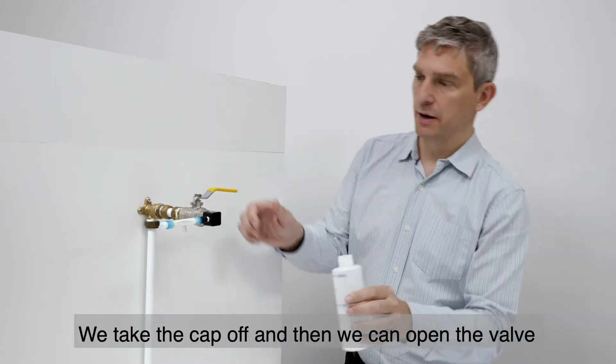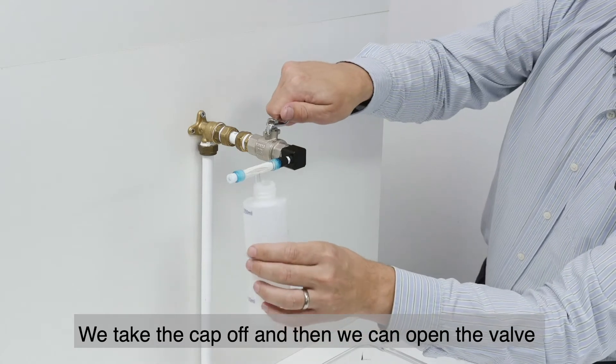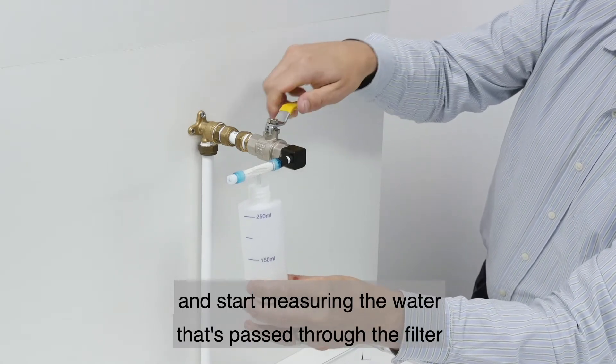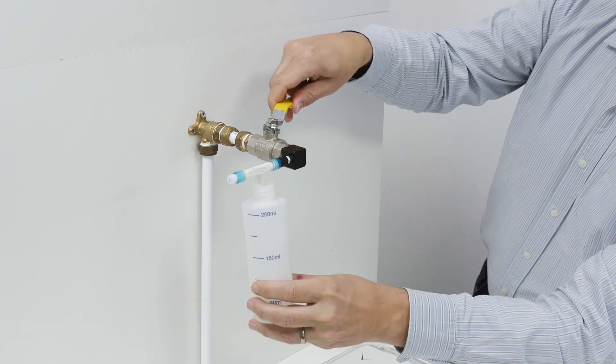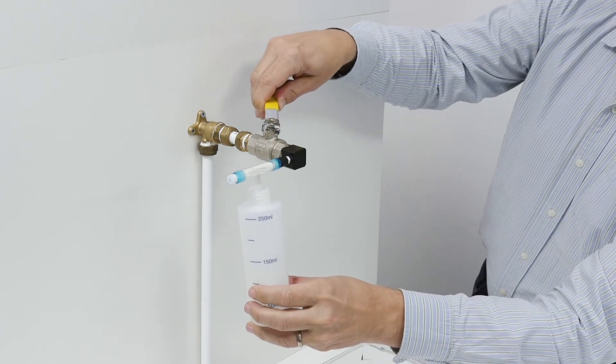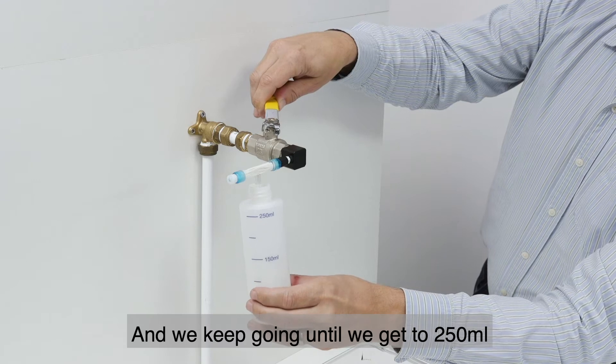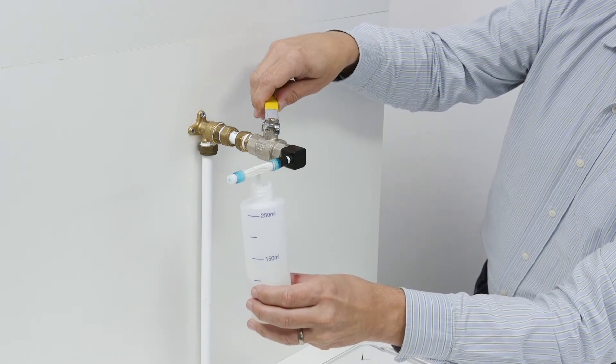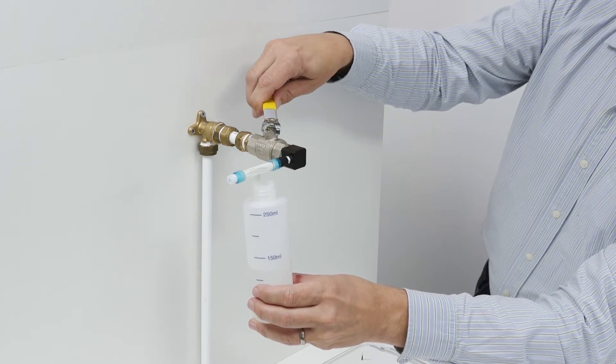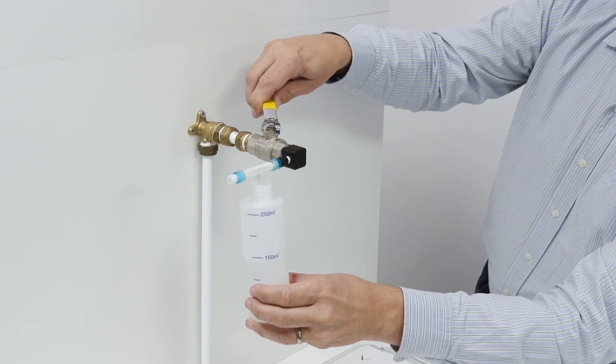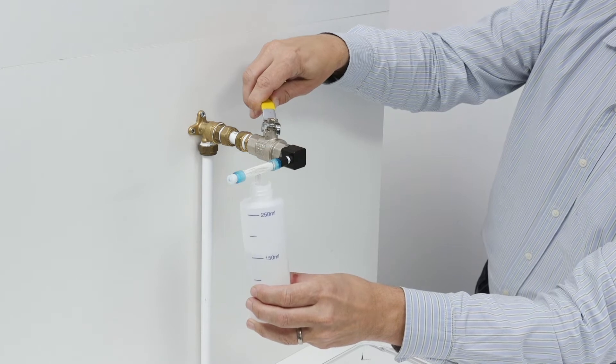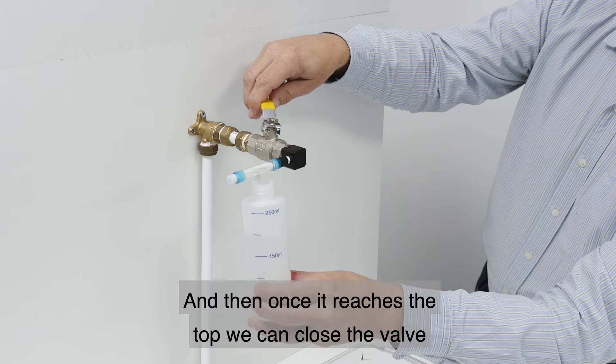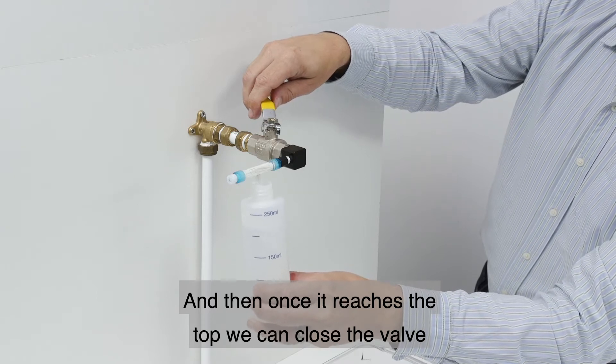So we take the cap off, and then we can open the valve and start measuring the water that's passed through the filter. We keep going until we get to 250 milliliters. And then once it reaches the top, we can close the valve.